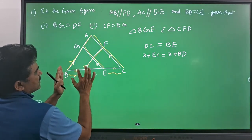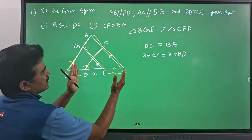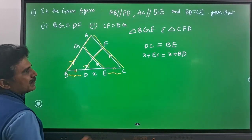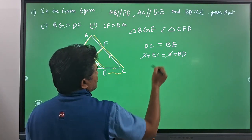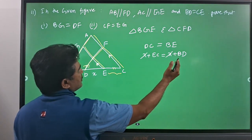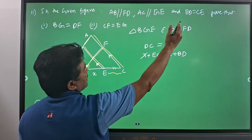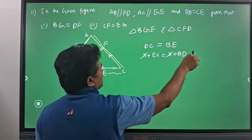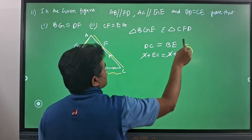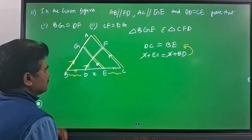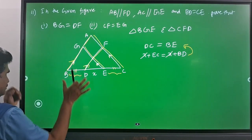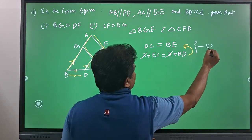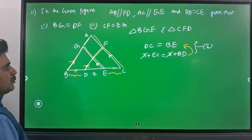BE can be written as X plus BD, and DC can be written as X plus EC. If you cancel X on both sides, you get EC is equal to BD — which is exactly the given condition BD equals EC. So from this we can easily say DC is equal to BE. That gives us one side property.